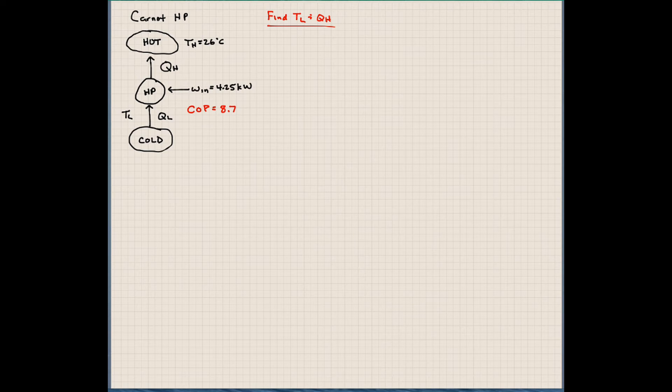So the first thing we're going to do, just like we've done for the previous problems, is we're going to define our coefficient of performance for our heat pump. And that's going to be equal to 1 divided by 1 minus TL over TH. So that's our definition of our coefficient of performance. So it's similar to our efficiency calculation earlier for the equivalent heat engine.